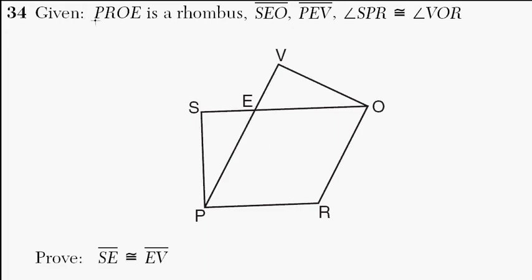Number 34. It says, given PROE is a rhombus, SEO is a line segment. Basically, E is contained on the line from S to O. E is on that line.